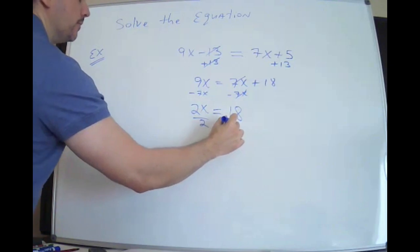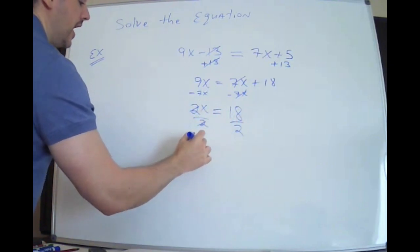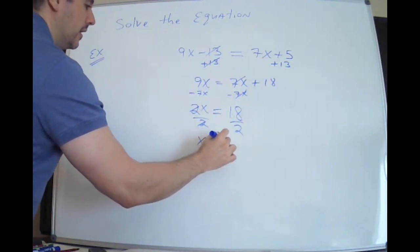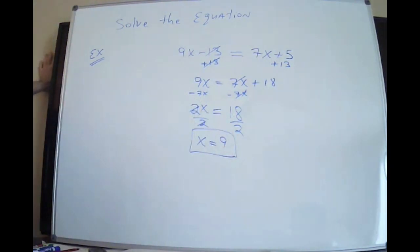Opposite of multiplication is division. Again, I have to do it to both sides to maintain my balance. You have to maintain the balance.